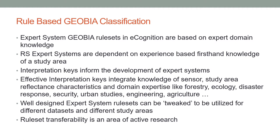Effective interpretation keys integrate the knowledge of the sensor, the study area reflectance characteristics, and domain expertise like forestry, ecology, disaster response, security, urban studies, engineering, agriculture, and so forth. Well-designed expert systems can be tweaked to be utilized for different data sets and different study areas, and this is known as rule-set transferability, which is an area of active research.